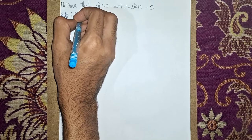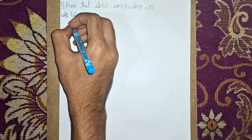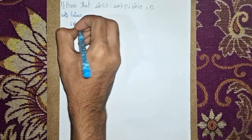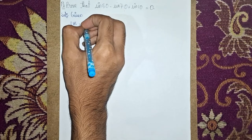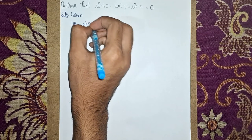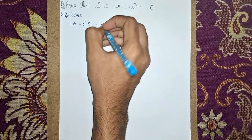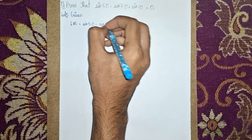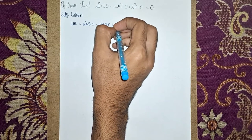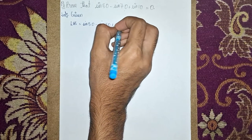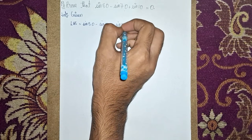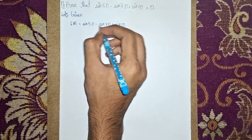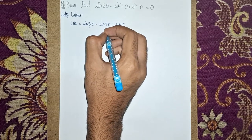Given: the left hand side, LHS, is equal to sin 50 minus sin 70 plus sin 10. Now here I'm taking these two terms and applying the transformation formula.